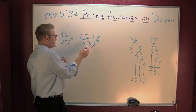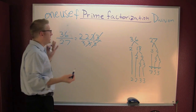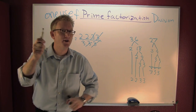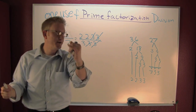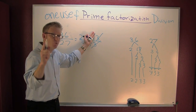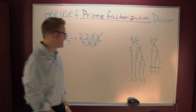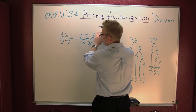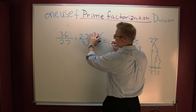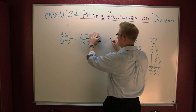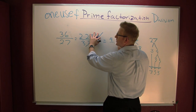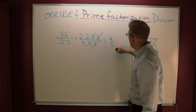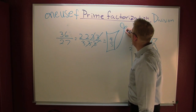Now we take out all the unnecessary factors of one. Five over five is one, a million over a million is one, three over three is one. So this three cancels that three, and this three cancels that three. After all the cancellations, we're left with 2 times 2 over 3, which is 4 over 3.